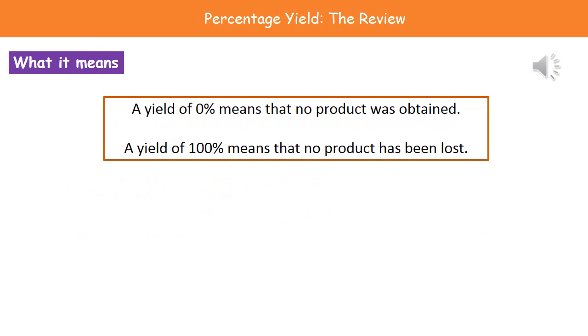Once we've actually got these numbers, we need to understand what they're telling us. If we have a yield that has 0%, then that means we made no product, so that's obviously not a good thing. If we had a yield of 100%, however, that means we didn't lose any product in this process, which is the goal of any industrial process, to be as close to that 100% as possible.